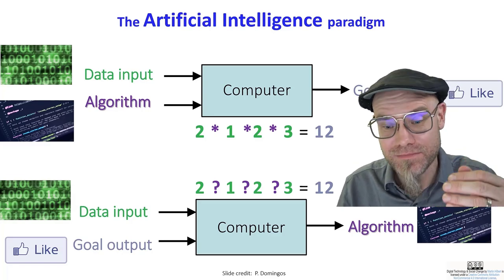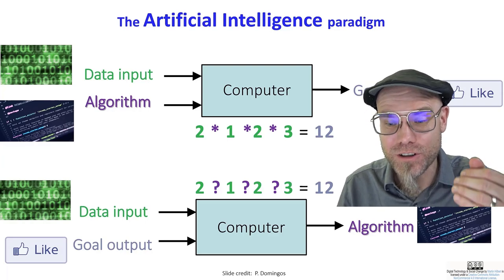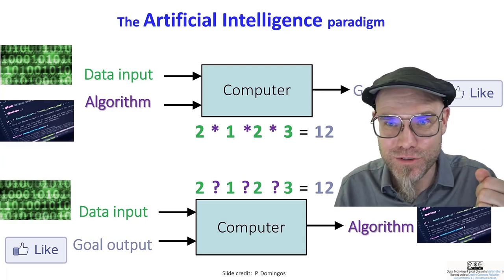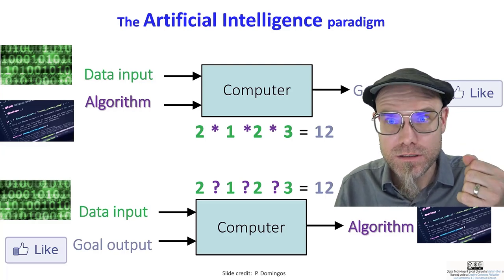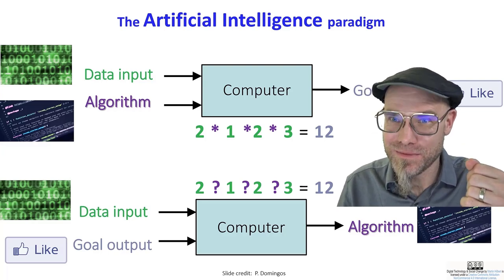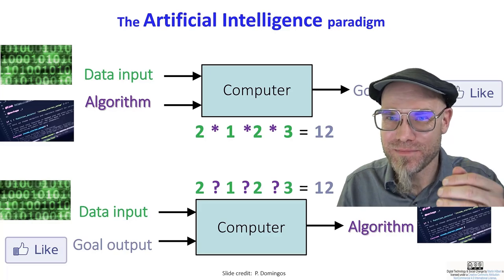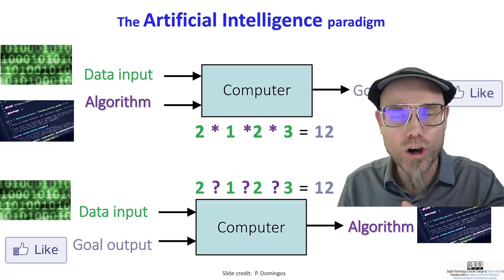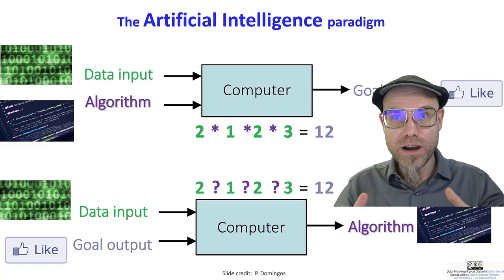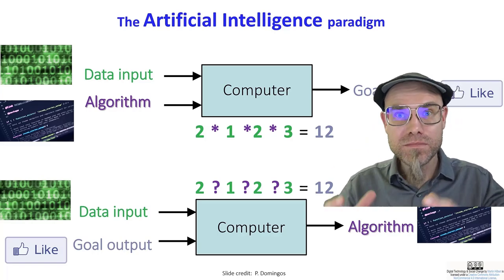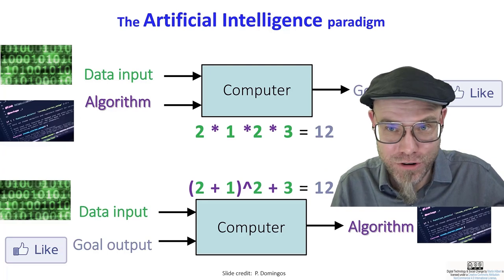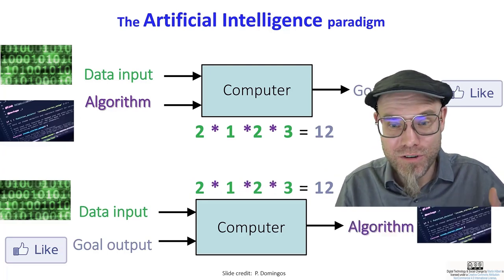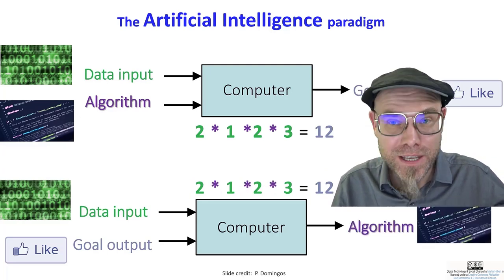So what Pedro Domingos calls the master algorithm. What the master algorithm of machine learning does, it computes the best algorithm. That's why it's the master algorithm. It automates knowledge creation. You just say, here we are and that's where we want to go. Now machine, figure out the best way to go. And there are many ways that lead to Rome.